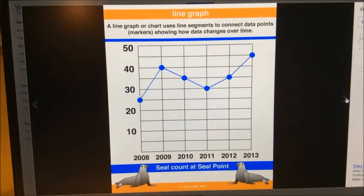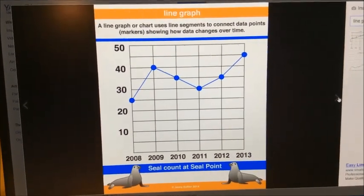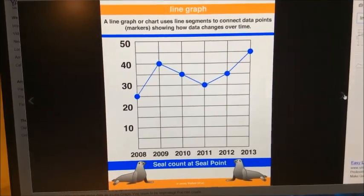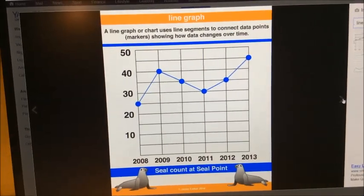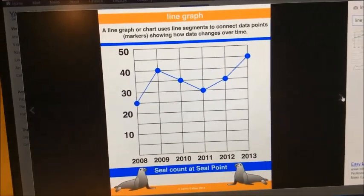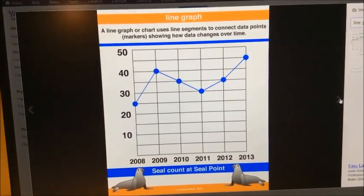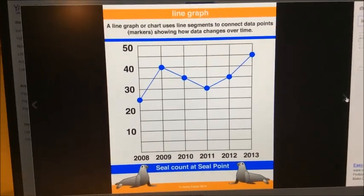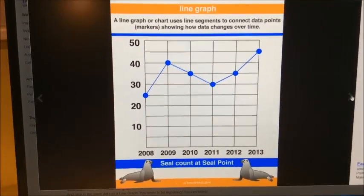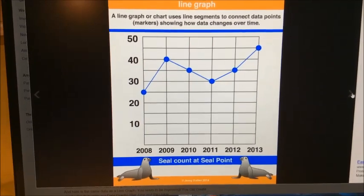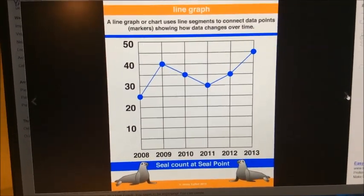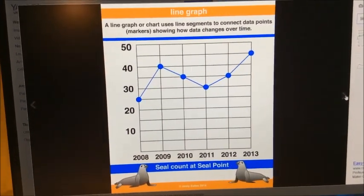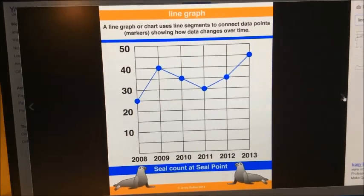This line graph shows you how the population of seals have changed over time at an area called Seal Point. You can see along the bottom is the year, and along the side on the left-hand side, on the y-axis, we have how many seals there are. So in 2009 there were 40 seals living at Seal Point, but in 2011 it had dropped to 30.